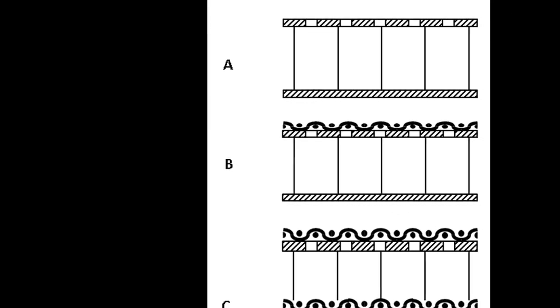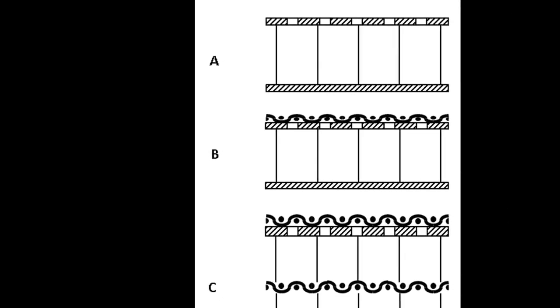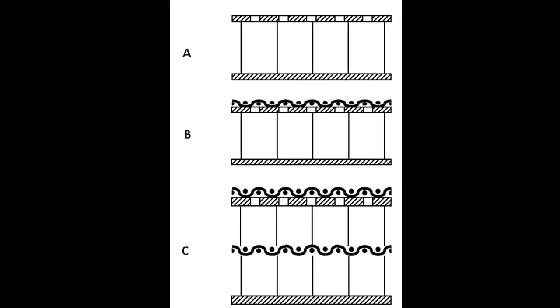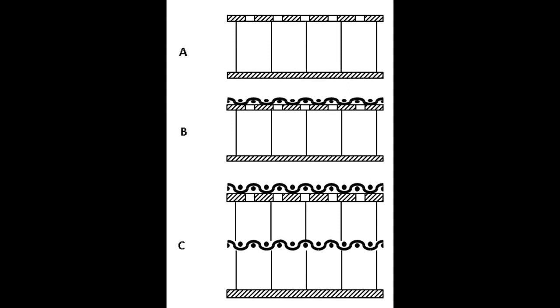Impedance tube or Kundt tube, flow duct facilities, in-situ method or Dean's method. All these methodologies measure the liner's normal impedance. However, only flow duct facilities and the in-situ method allow the measurement of the impedance in presence of the grazing flow which can affect the impedance itself. Moreover, the in-situ method is the only one...